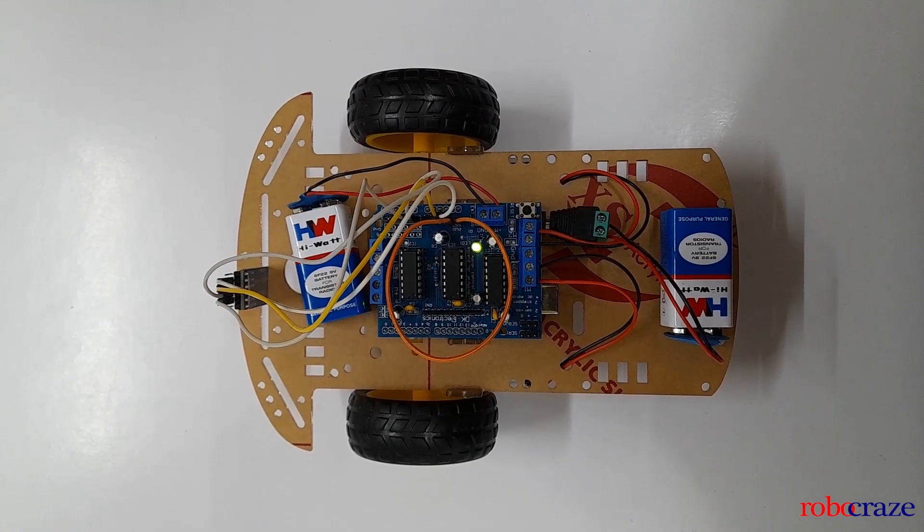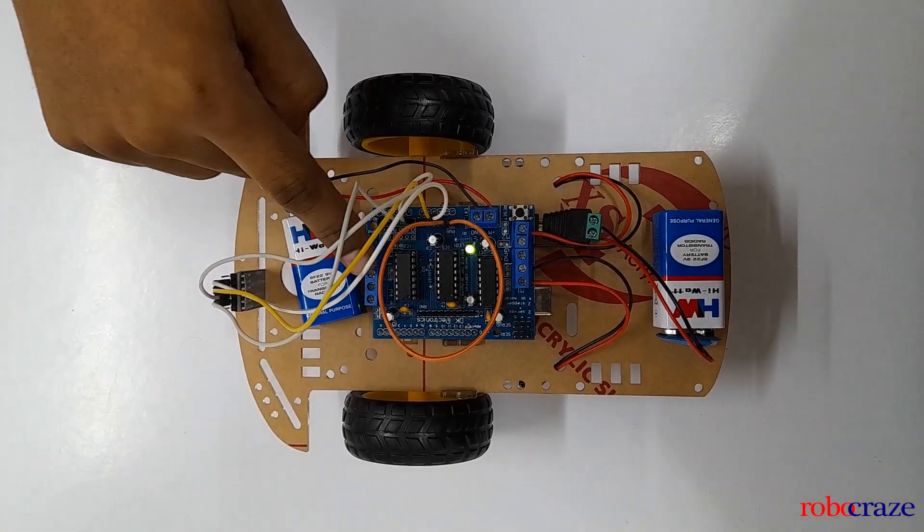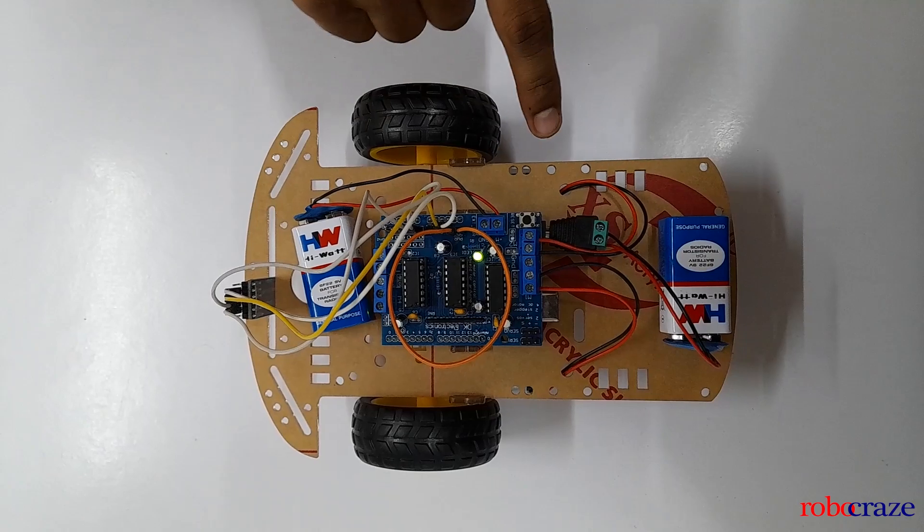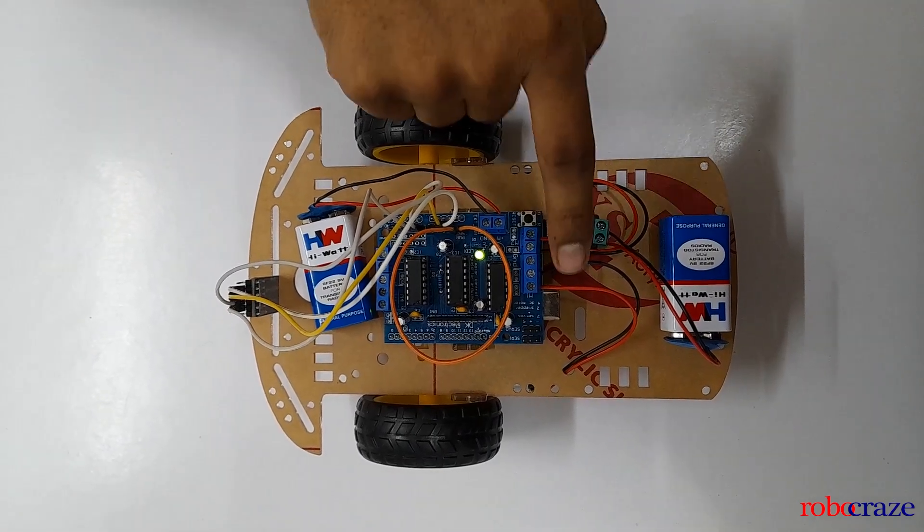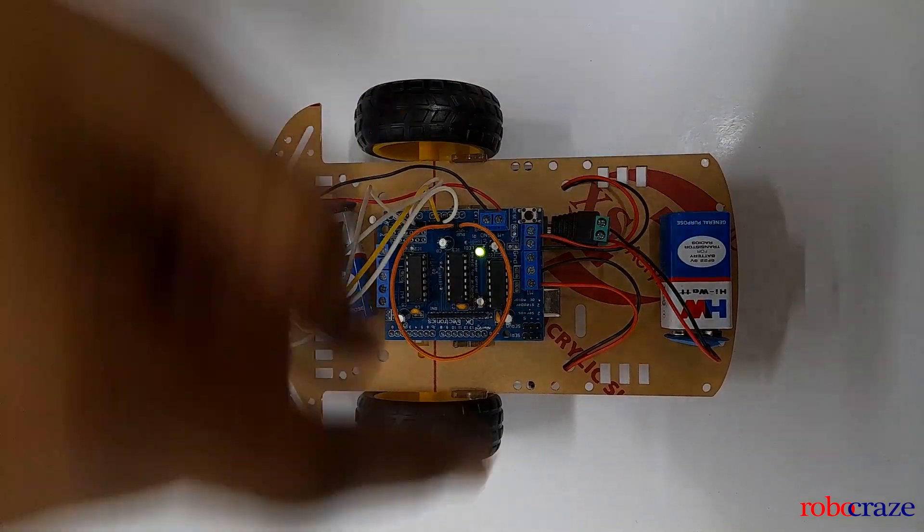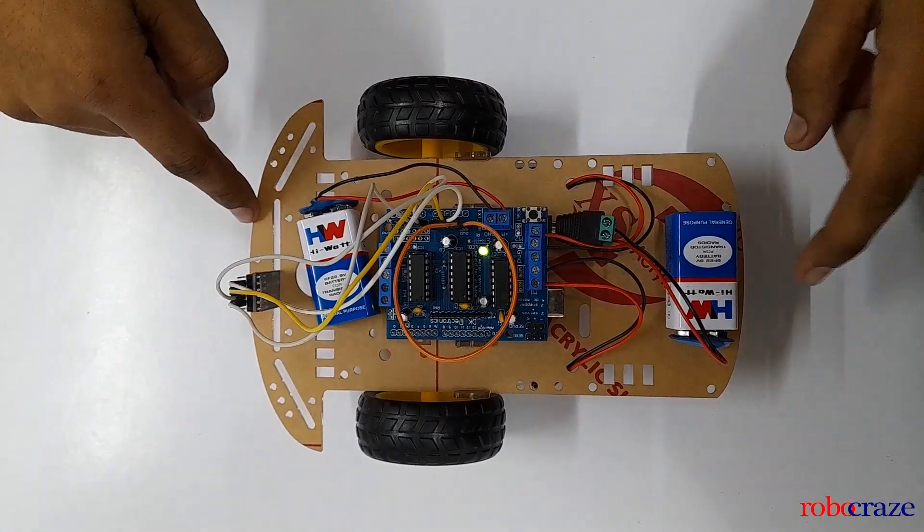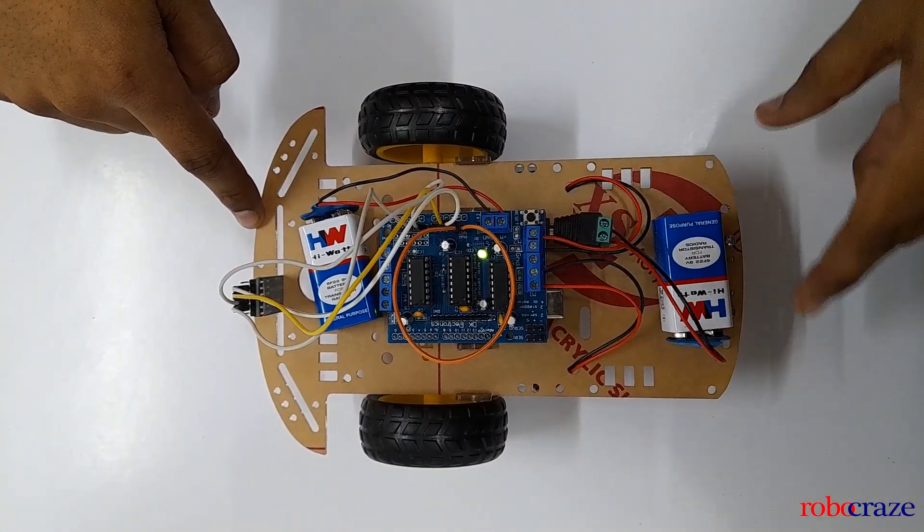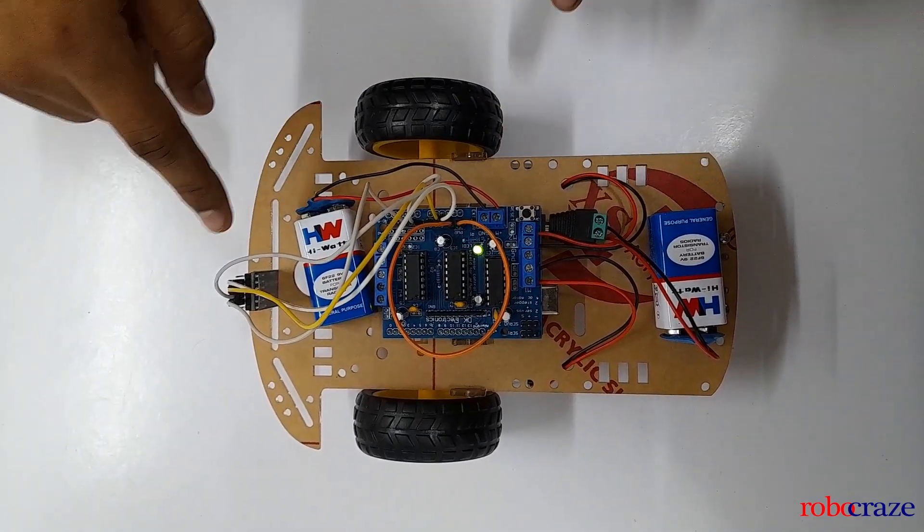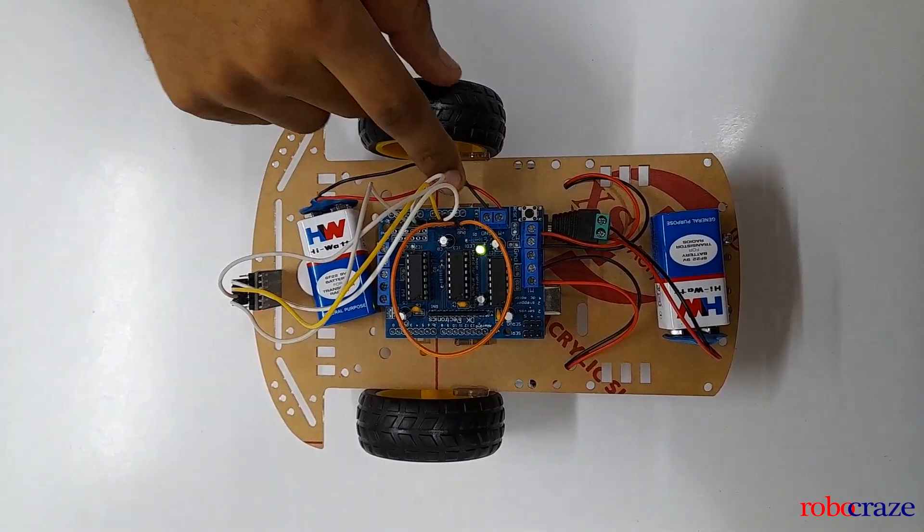Now let's try to control the Bluetooth controlled car. As we have uploaded the code, let's go through the connections again. We have uploaded two 9 volt batteries, one to the driver and one to the Arduino Uno. We have connected motors to M1 and M2. So M1 is connected to the left motor and M2 is connected to the right motor. This is the front and this is back, and the universal wheel is mounted on the back.